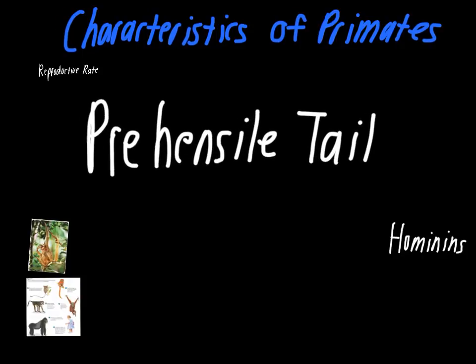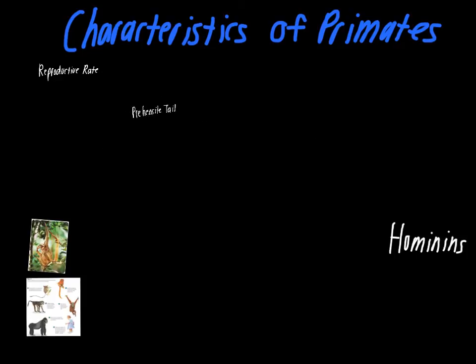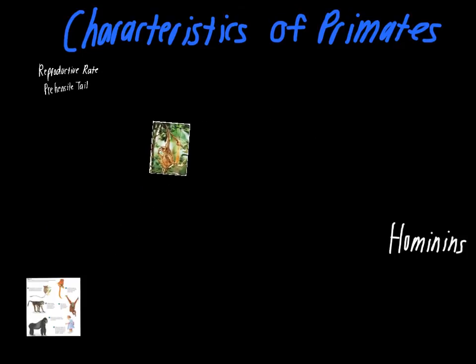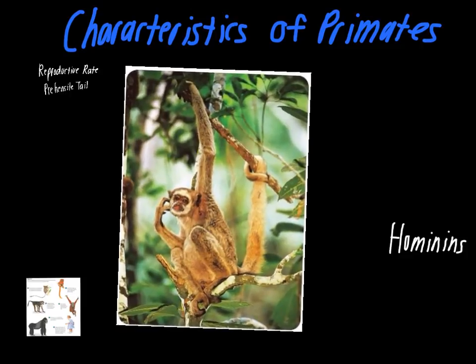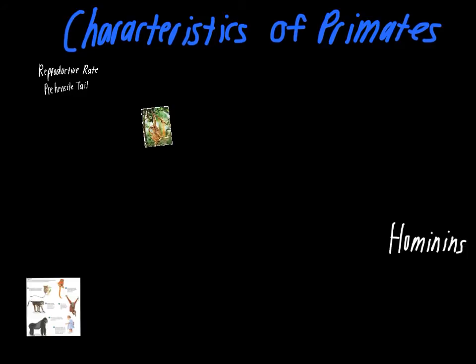A term we'll use when going through primate groups is the prehensile tail. A tail like this is used almost like a fifth limb — it can be used for grasping tree limbs and things like that. An example is spider monkeys, which use their tail to hold onto tree limbs. Different primate groups use their tails a little bit differently.